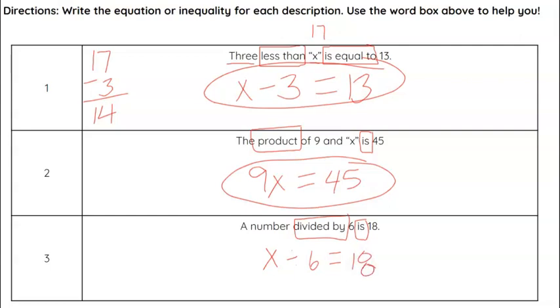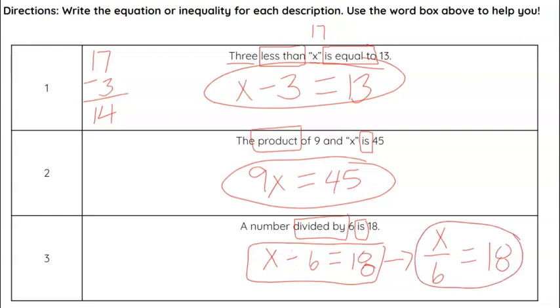Now, another way to write division, and a more popular way you'll see division written than using this division sign that we saw in elementary school, is to use a fraction. So you will more likely see this as x divided by 6 is equal to 18. So that's something to make note of and be aware of as we work in high school math. Division is often going to be written as a fraction, not using that division sign.